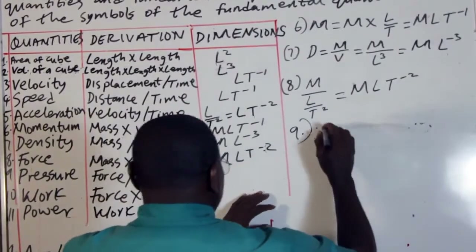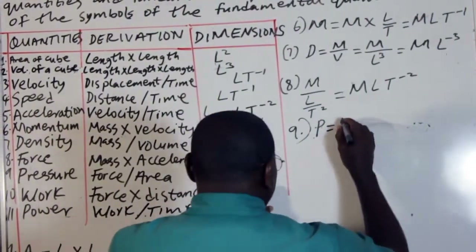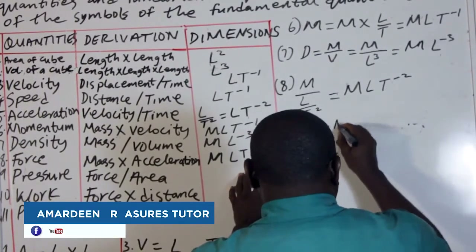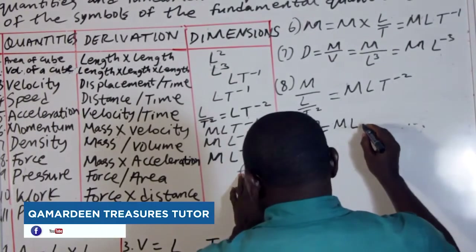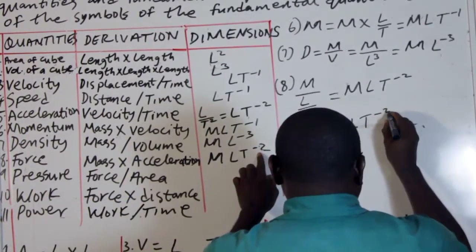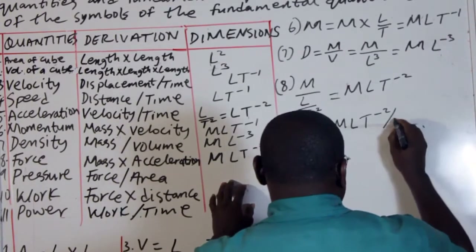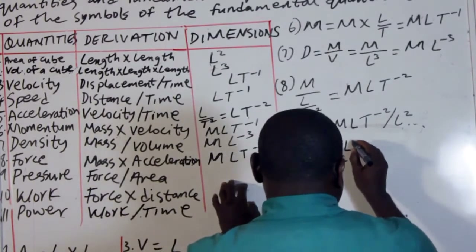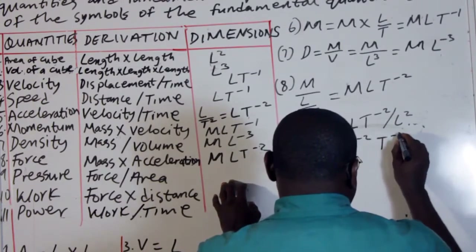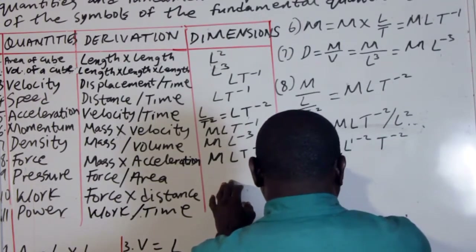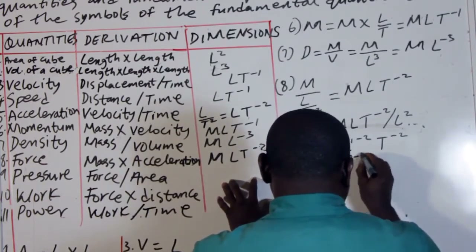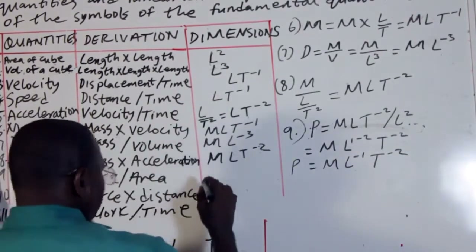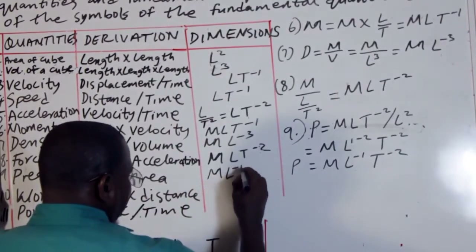Number 9 is pressure. The derivation of pressure is force over area. Force is MLT raised to power minus 2, and area is L raised to power 2. So dividing gives M times L raised to power minus 1 times T raised to power minus 2. Therefore pressure is ML raised to power minus 1, T raised to power minus 2.